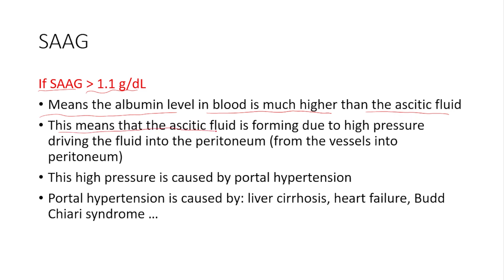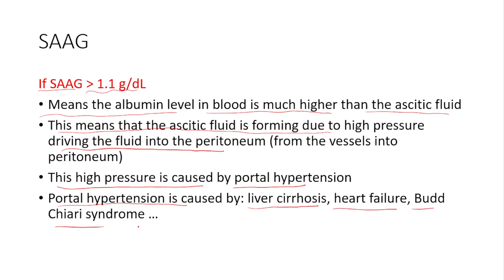This means the ascitic fluid has low protein or low albumin, which indicates the ascitic fluid is forming due to high pressure driving the fluid into the peritoneum. Because of the low albumin in the ascitic fluid, the high pressure from the circulation is driving this fluid through healthy vascular walls. This high pressure is most often caused by portal hypertension, which itself is caused by liver cirrhosis — the most common cause — as well as heart failure, Budd-Chiari syndrome, and other causes.